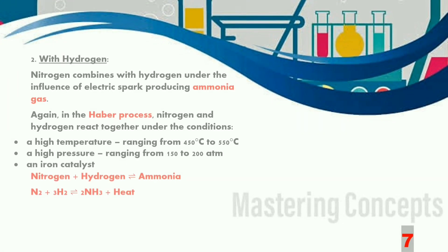Let us find out how nitrogen and hydrogen react with each other. Nitrogen combines directly with hydrogen under the influence of electric spark to produce ammonia gas. Now this ammonia can also be produced by the Haber's process.